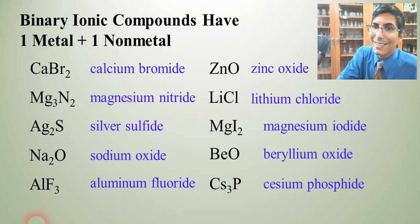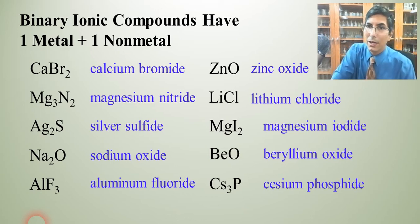Hopefully we can see the difference between ionic compounds and molecular or covalent compounds. With covalent compounds, we use numerical prefixes like mono, di, tri, tetra, penta, hexa, and so forth. With ionic compounds, we don't do that.